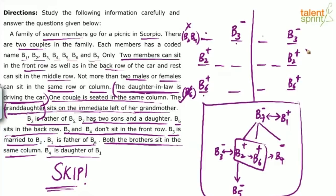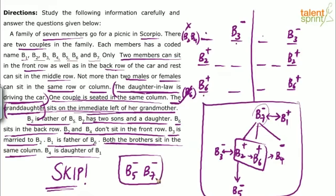Three persons are plotted in both cases. Now the granddaughter B5 sits on the immediate left of grandmother B7 — they need two consecutive positions in the same row. In case 1 the only possibility is B5 and B7 take the two remaining middle row seats. Similarly in case 2, B5 and B7 are placed. Only two positions remain unfilled in each case.